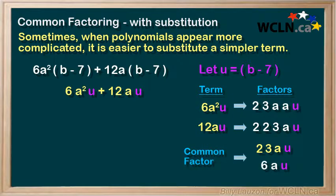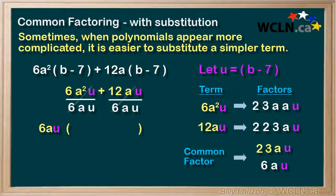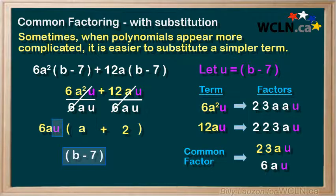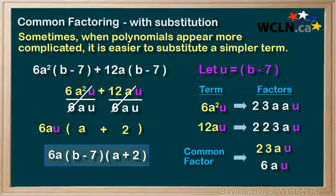So let's take this common factor and factor it out of the two terms. We set up our bracket, take the 6au and divide it into each of the terms. This will leave us an a for the first term and a 2 for the second term. The last thing we need to do is substitute u back in for its original expression b minus 7. Once we've done that, we're left with 6a times b minus 7 times a plus 2 as our factored expression.